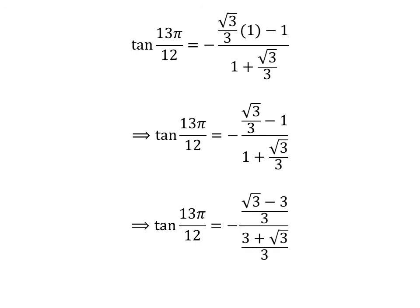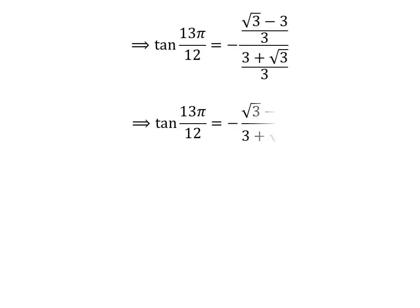Further simplification gives us tangent of 13 times pi upon 12 is equal to minus of square root of 3 minus 3 upon 3, upon 3 plus square root of 3 upon 3. Cancelling out the common factor 1 upon 3 gives us tangent of 13 times pi upon 12 is equal to minus of square root of 3 minus 3, upon 3 plus square root of 3.